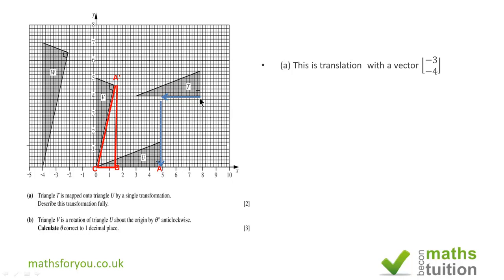If we take any particular point in triangle T, in this case the vertex that contains the 90 degrees, I moved out 3 to the left, negative, and 4 down, negative. We should get a transformation by translation and the vector is minus 3, minus 4.